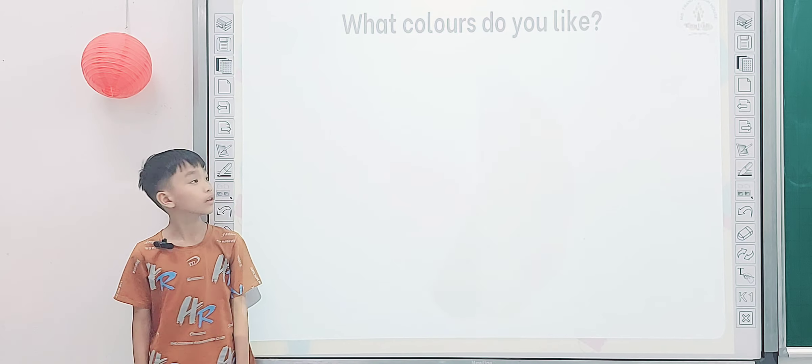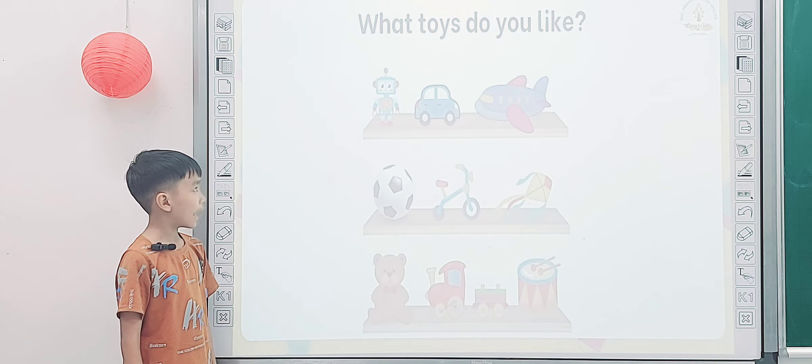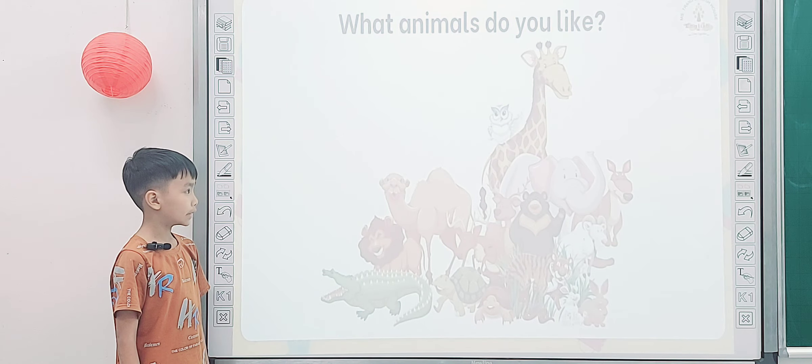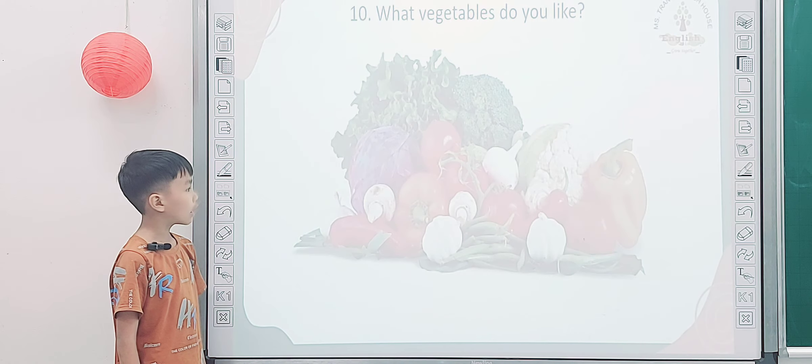Where do you live? I live in here. What colors do you like? I like blue. What toys do you like? I like... What animals do you like? I like giraffe. And what shoes do you like? I like... What vegetables do you like?